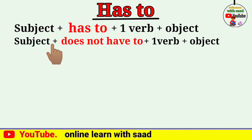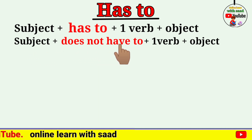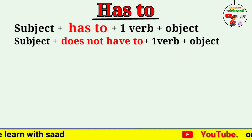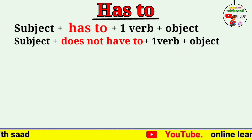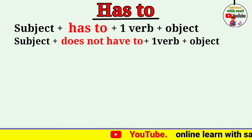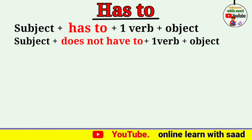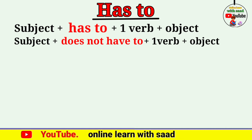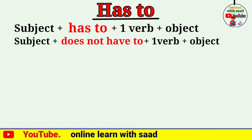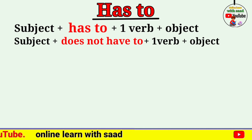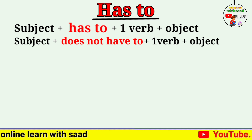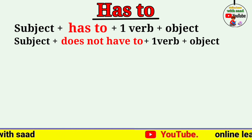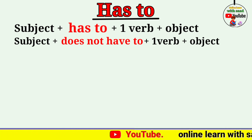Structure ہے: Subject + does not have to + first form of verb + object۔ Students، do اور does کو انشاءاللہ present indefinite tense میں detail میں discuss کریں گے — یہاں میں do اور does کی detail نہیں بتا سکوں گا۔ چلتے ہیں sentence making کی طرف۔